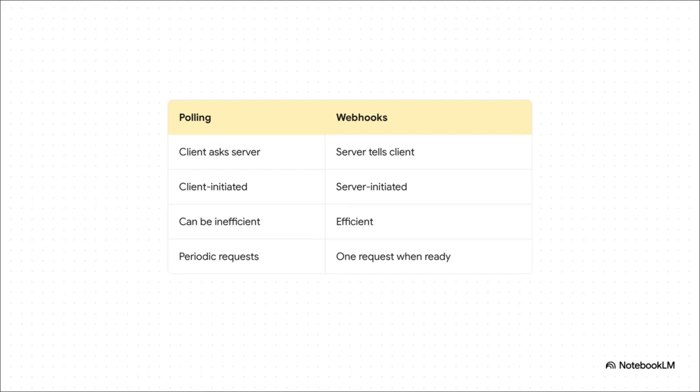There are two main ways to get that update. First, you've got polling. This is the digital equivalent of a kid in the backseat of a car asking over and over, are we there yet? The app constantly bugs the server. It works, but it can be super inefficient. The much smarter way is using webhooks. This is more like the server saying, don't worry, I'll text you the moment we arrive. It's way more efficient because there's only one single notification, and it only happens when the job is actually done.